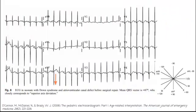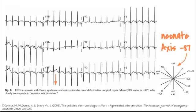Now let's look at this one — does it throw any red flags? We're isoelectric in lead I and actually negative in aVF, suggesting a left axis. Sure enough, this is an axis of negative 87 degrees. This is actually a neonate with Down syndrome and an AV canal defect. So just by looking at this EKG, you can recognize something is wrong — we don't have the expected right axis.